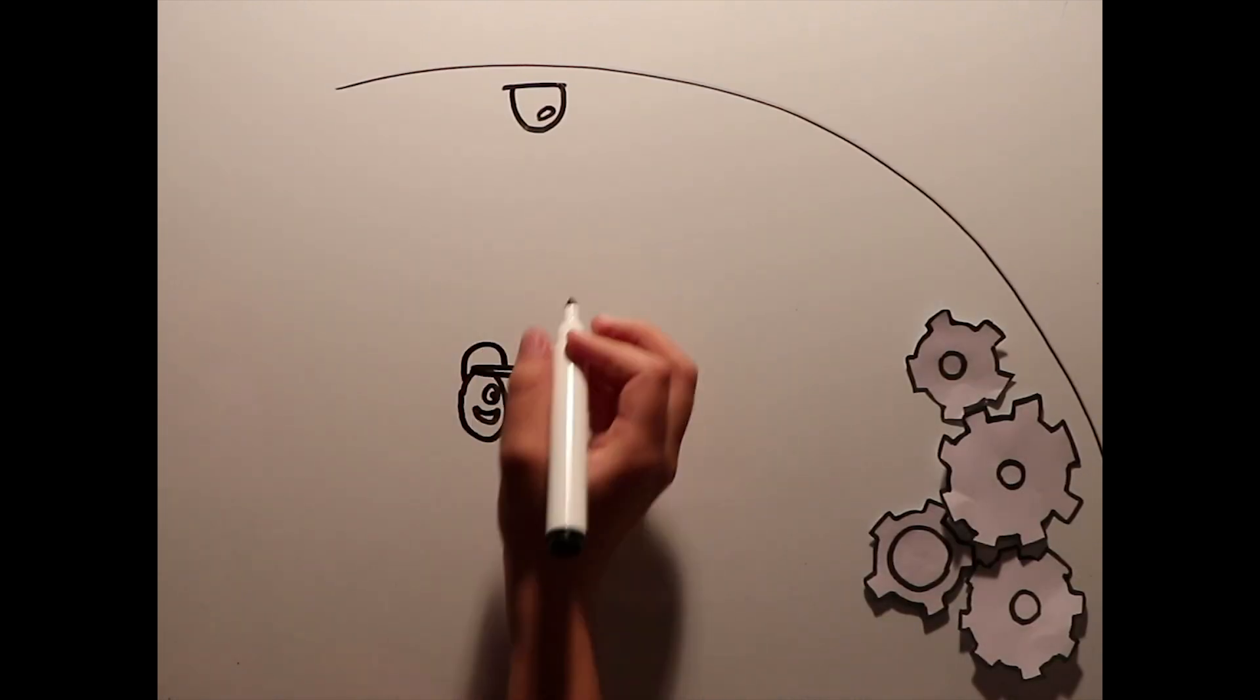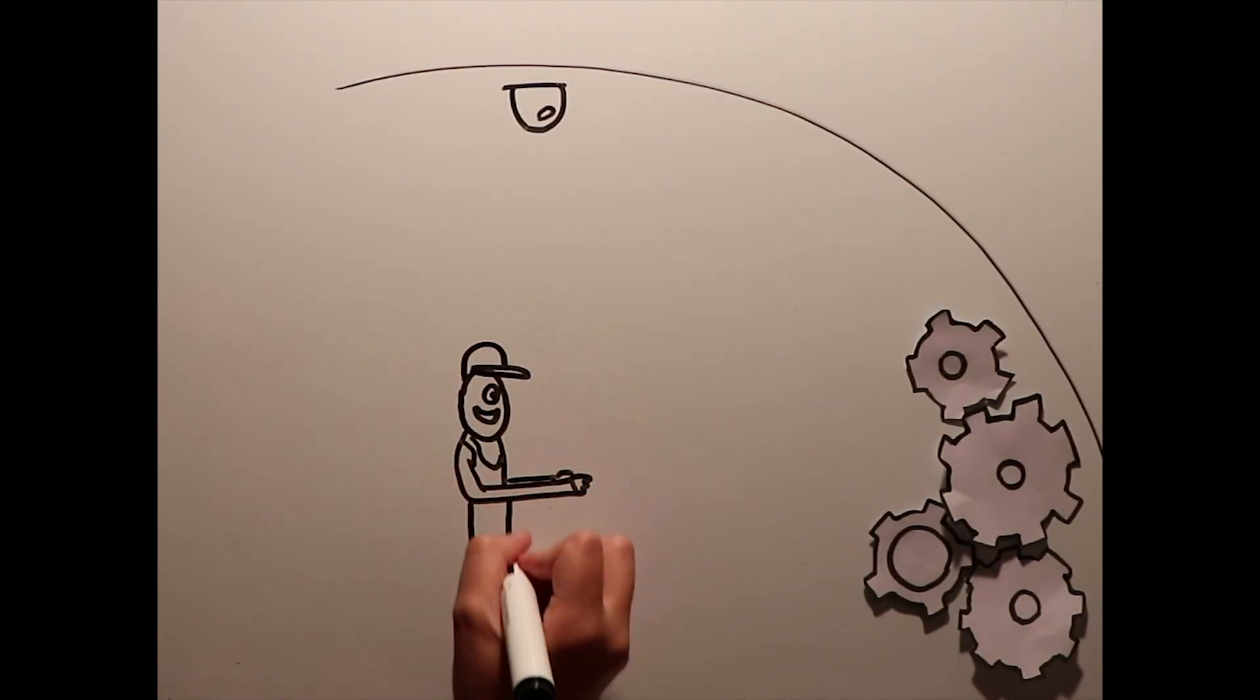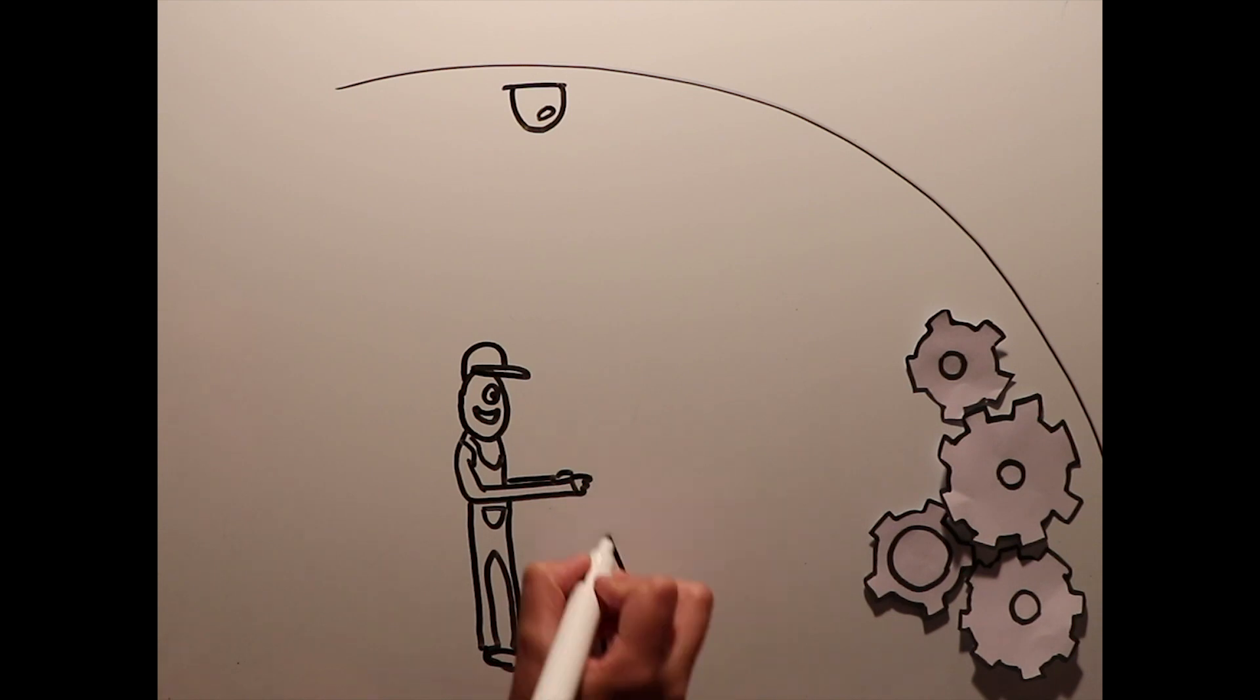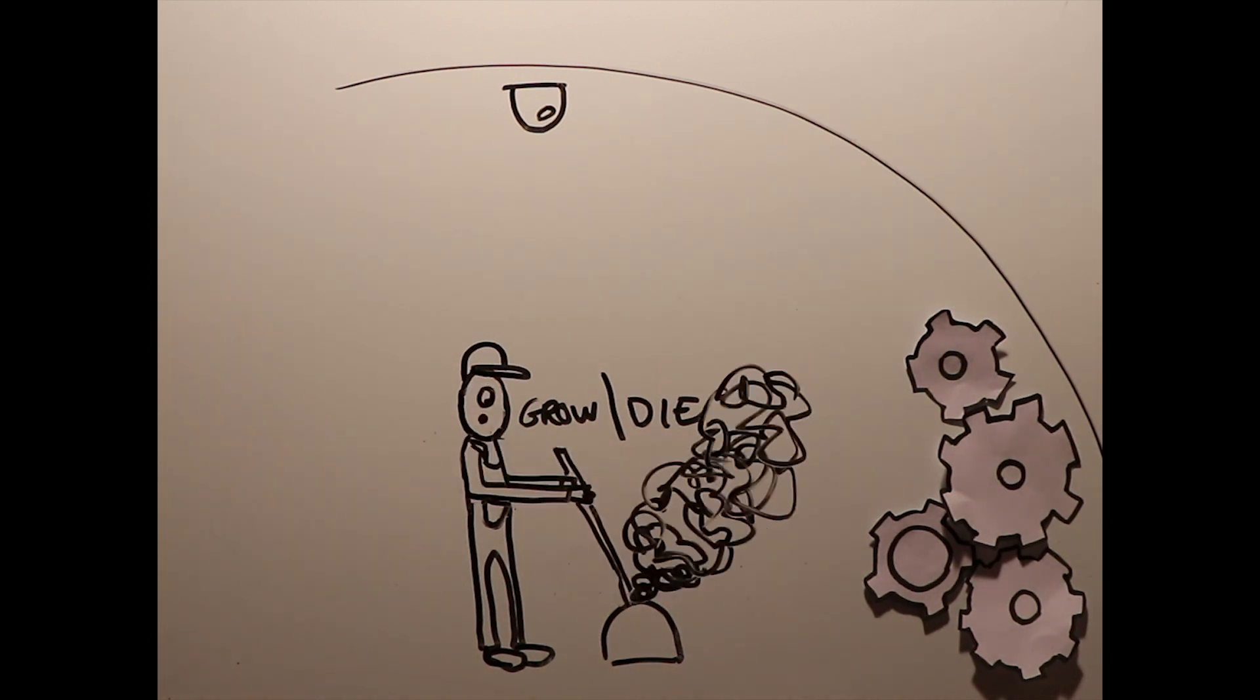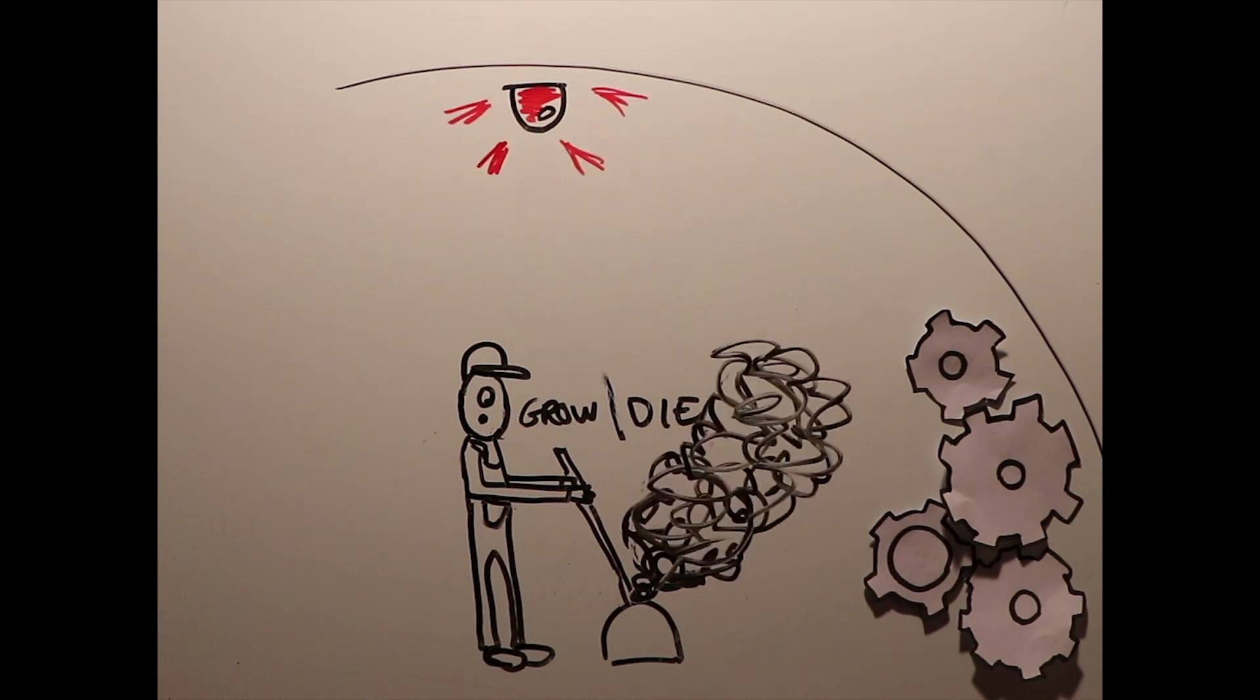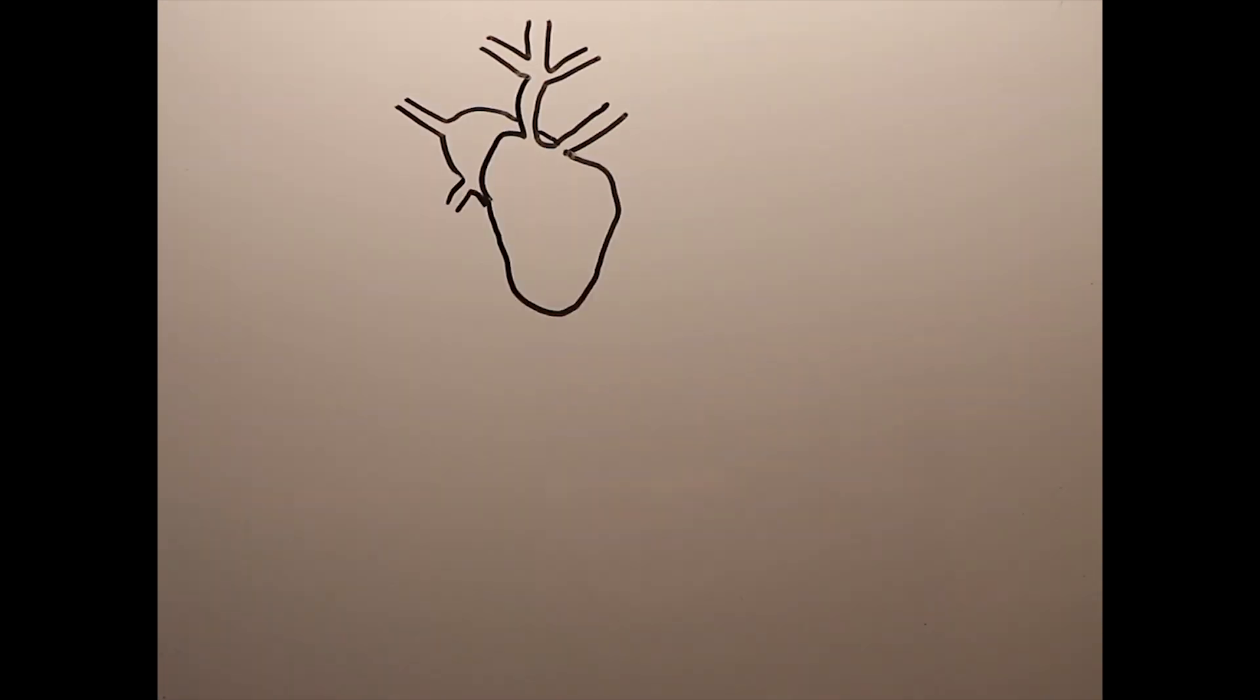PEA15 controls whether the cell decides to grow or die. You can say that PEA15 is sort of the conscience of the cell. That is why it's not surprising that errors in the action of PEA15 mess up the control room of the cell. This can lead to diseases like cardiovascular disease, diabetes and some types of cancer.